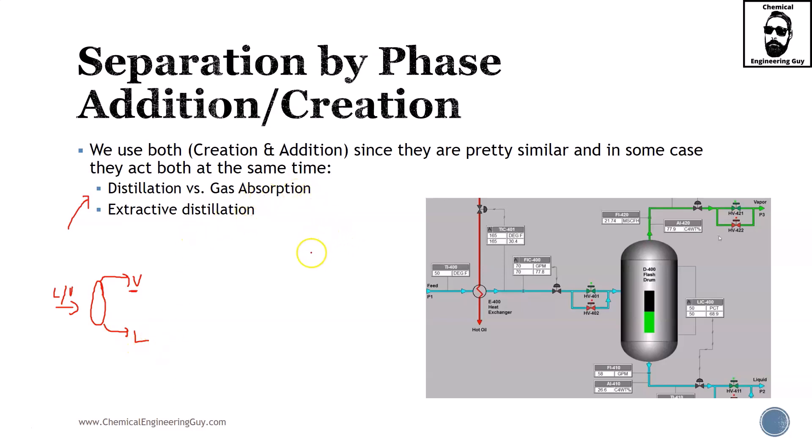For gas absorption, we are adding another phase. We have our gas which requires cleaning, so we add a liquid. In these two cases, it's very easy to separate them. If I have to make a section for separation by phase addition and another for phase creation, these two processes will be very easily separated.